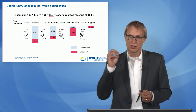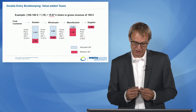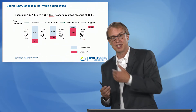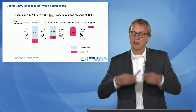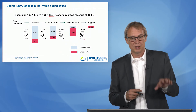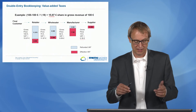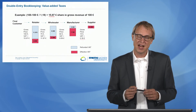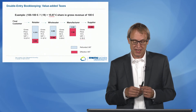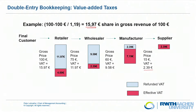The manufacturer, because they paid the supplier, gets that 2.39 euros back from the financial authority — basically a zero-sum game. The supplier pays it to the financial authority, and the manufacturer gets it back. The manufacturer then increases the product's value and sells it for a gross price of 60 euros to the wholesale company, where the VAT share is 9.58 euros. The manufacturer pays that to the financial authority, and the wholesaler is refunded by the financial authority. The wholesaler then sells it with a profit margin to the retailer for 75 euros, which amounts to a value-added tax of 11.97 euros.